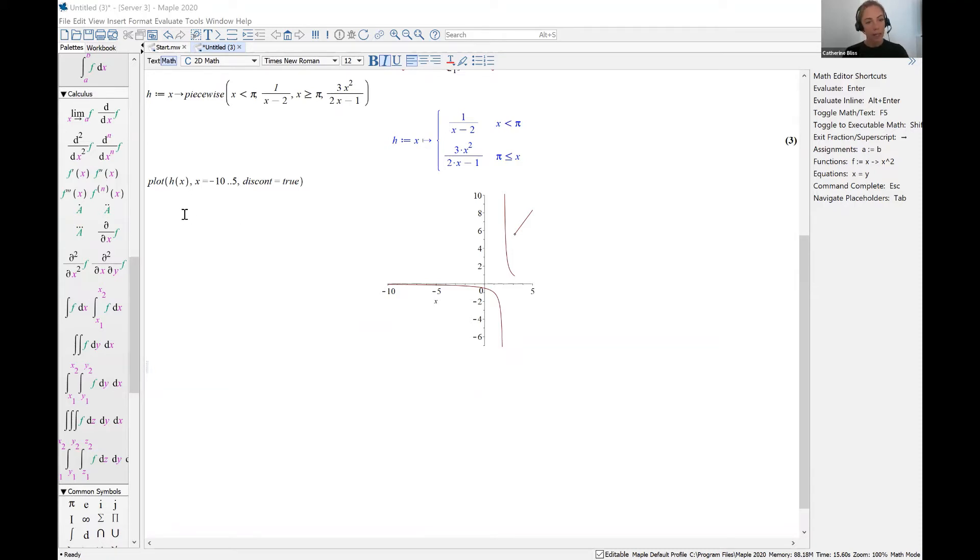Next, we can plot that function. I've entered the command to plot h(x) as x goes from -10 to 5. I've also set the discontinuity option to true. This lets Maple know that indeed we do have a discontinuous function.